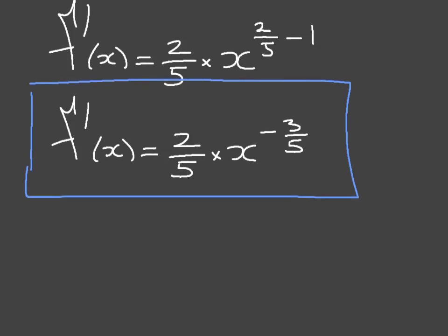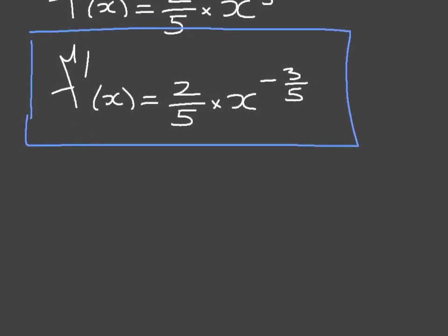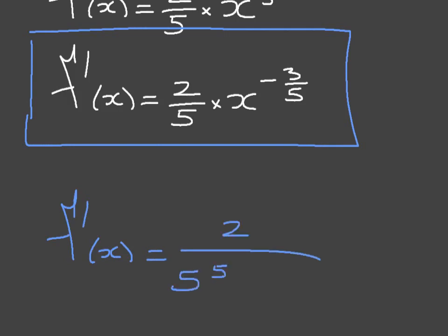If we wanted to, we could also write this final answer in root form. You would find that f dash of x is equal to 2 over 5 times the 5th root of x to the power of 3. It could be good practice to press pause and work out how to get from the power form to the root form.